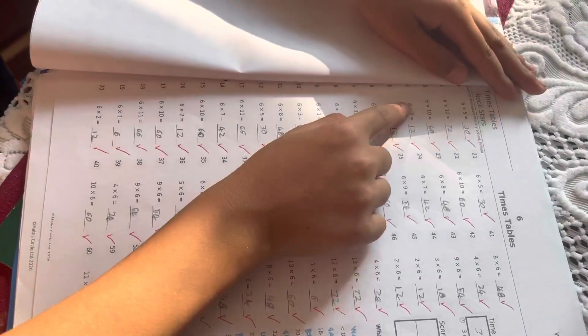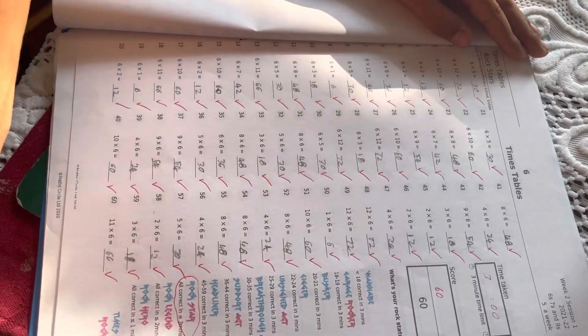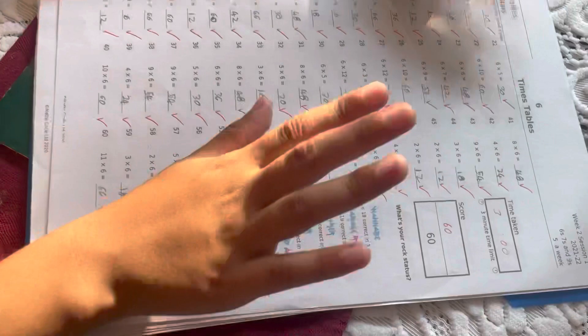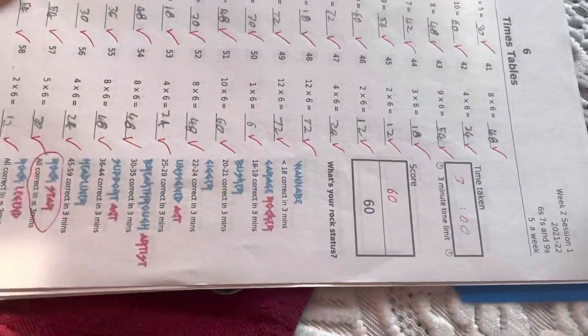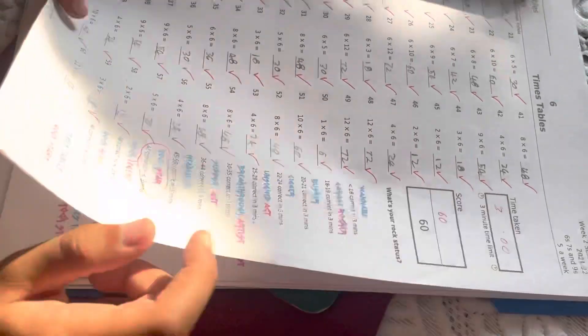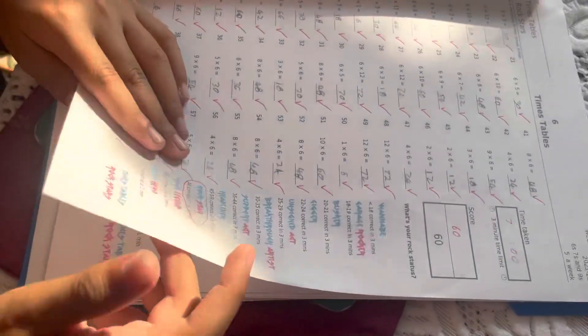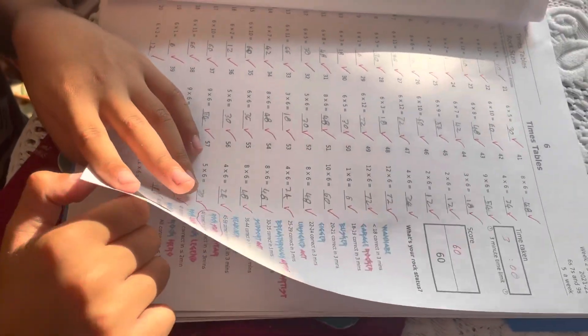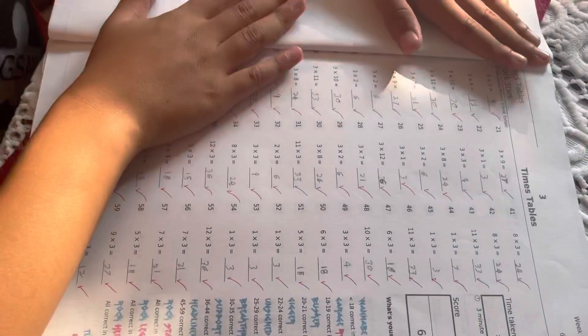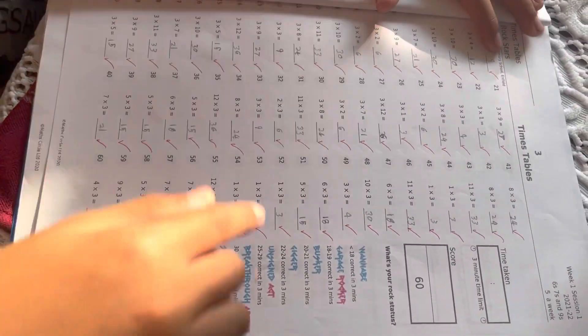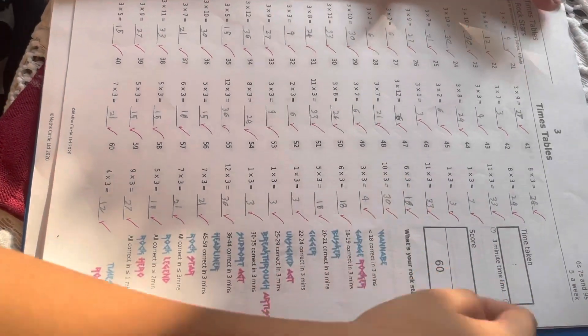And then I done six times tables this time, six times 12, 72, like that, easy. 60 again? Yeah, 60, three minutes taken. Oh, just three minutes? Yes, three minutes. And out of 60, you got 60. Yes, out of 60, I got 60. And here I got 60, out of 60, I just didn't write it down.